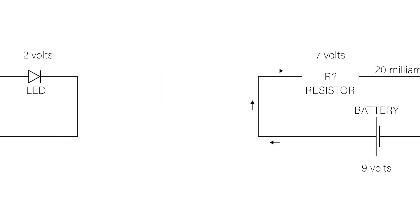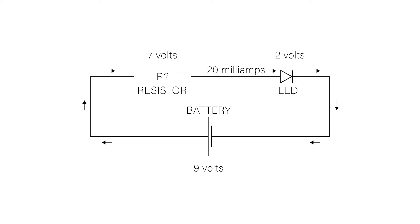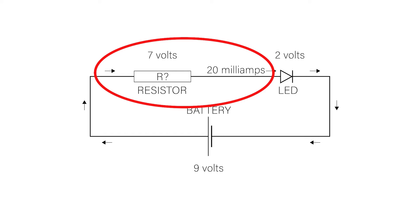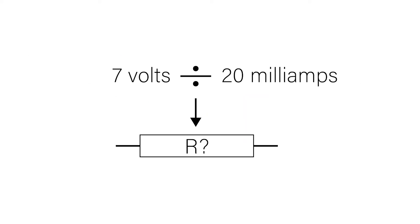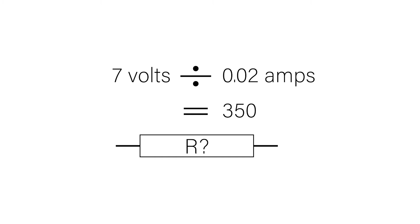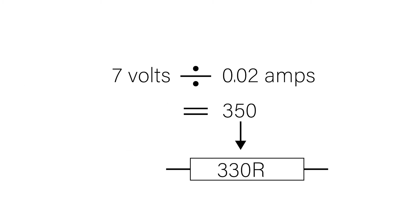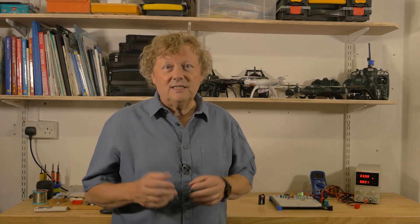The LED is designed to work with 20 milliamps flowing through it. The simple calculation to find the resistance is to divide the voltage across the resistor by the current through it measured in amps. 20 milliamps is 0.02 amps. Dividing 7 by 0.02 gives 350 ohms. There isn't a 350 ohm resistor available, so I'll go for the nearest one which is 330 ohms. It doesn't matter that it's slightly lower because the LED should be able to take a slightly higher current.